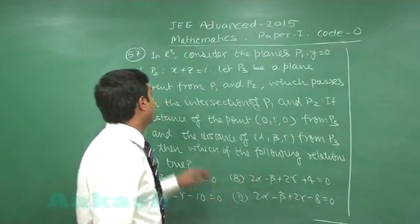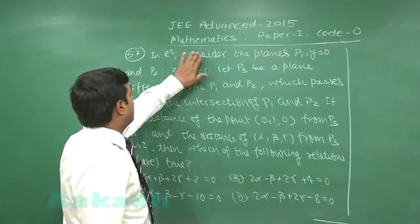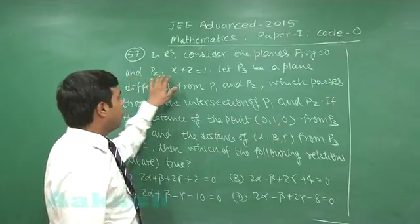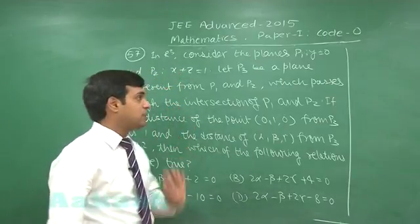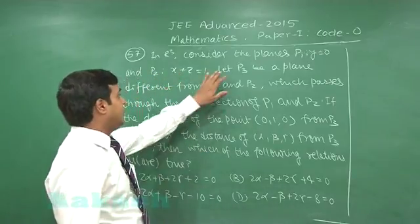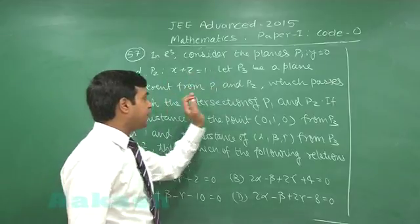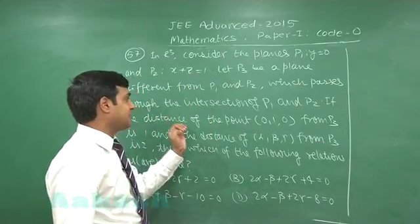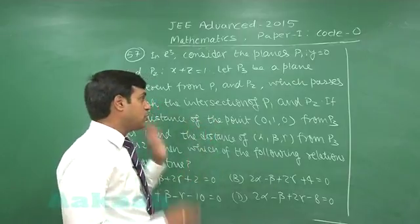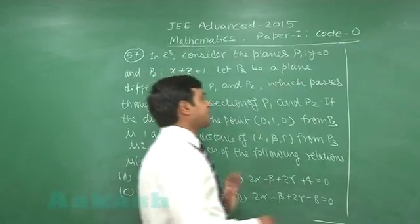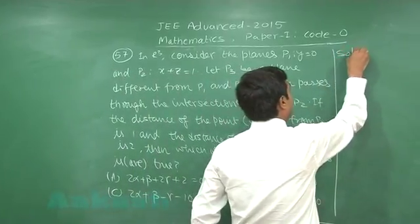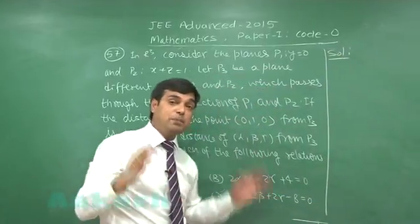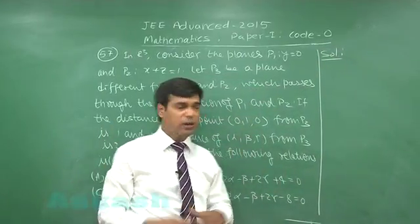Let us consider problem 57. Consider the planes P1: y = 0 and P2: x + z = 1. Let P3 be a plane different from P1 and P2 which passes through the intersection of P1 and P2. We can start this question using the concept of the family of planes, that is P1 + λP2 = 0.